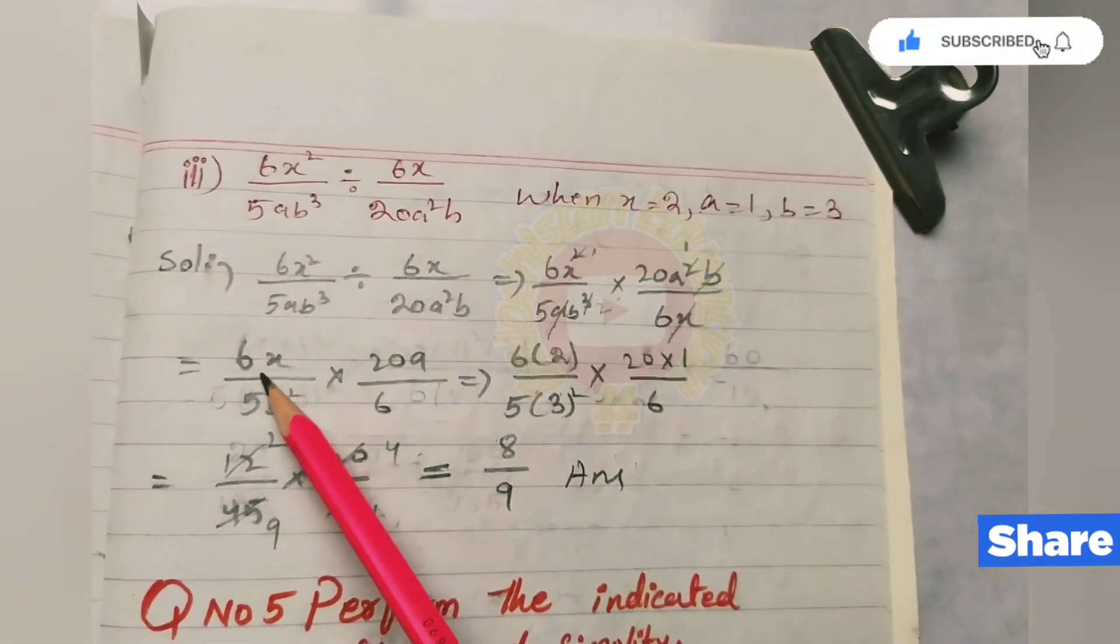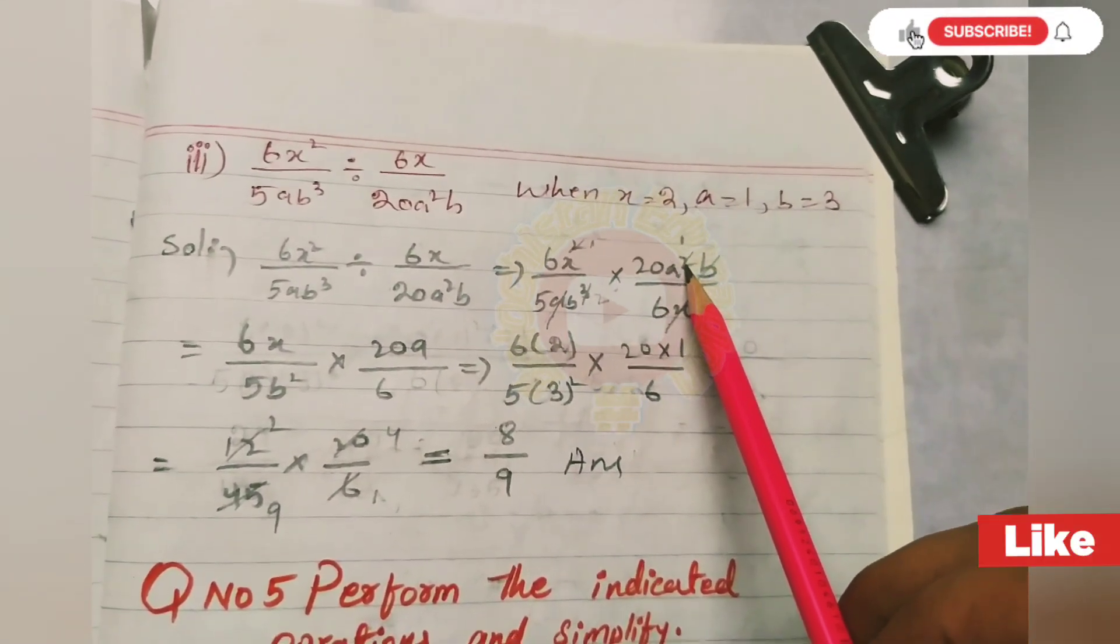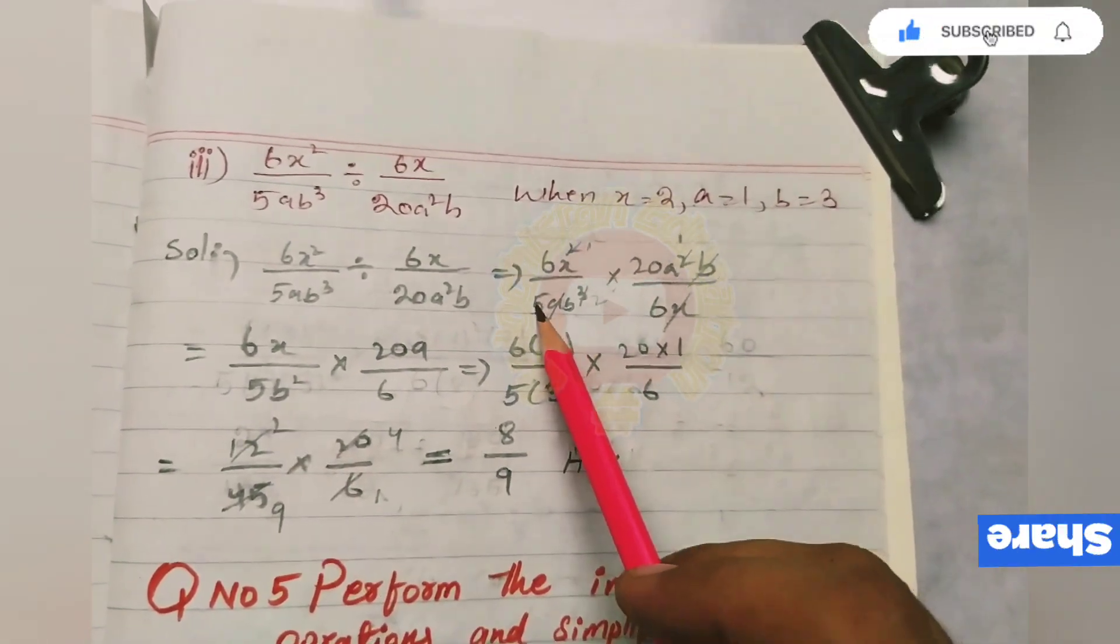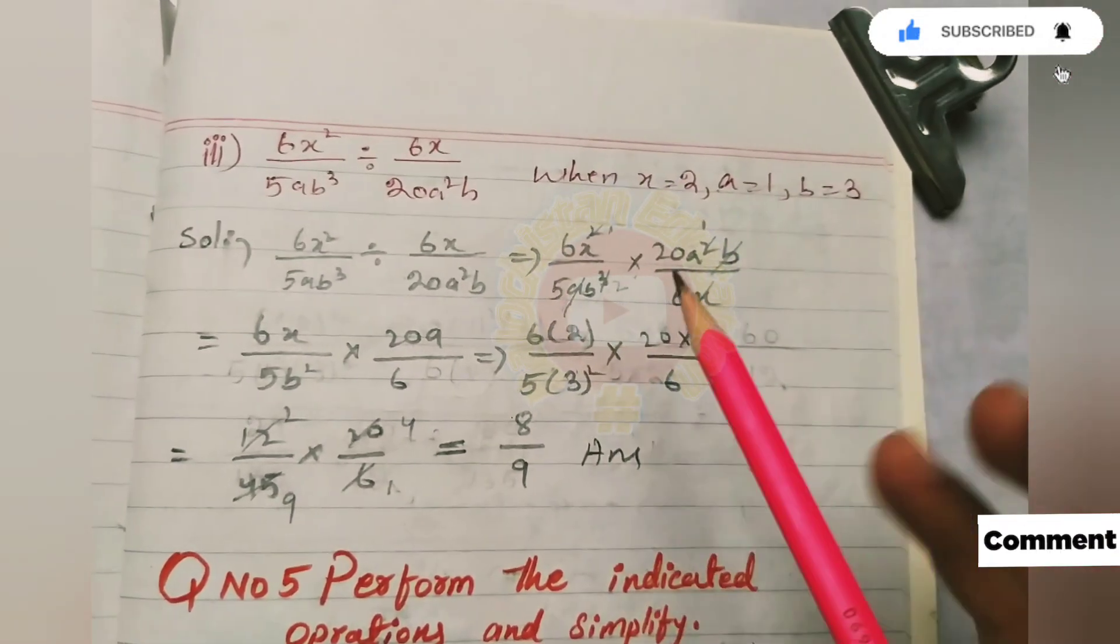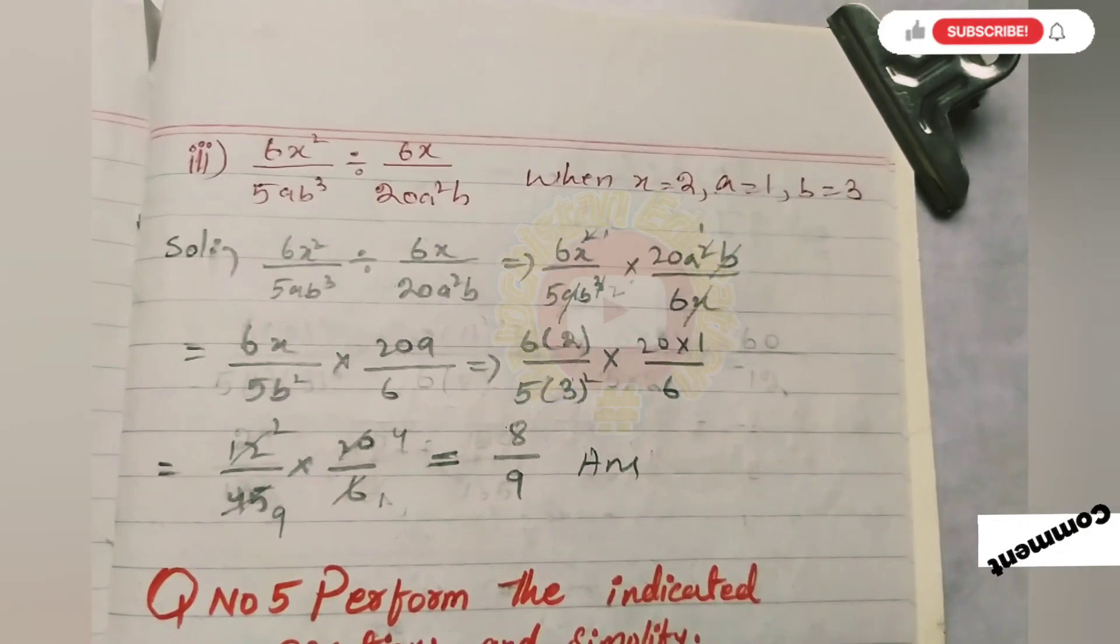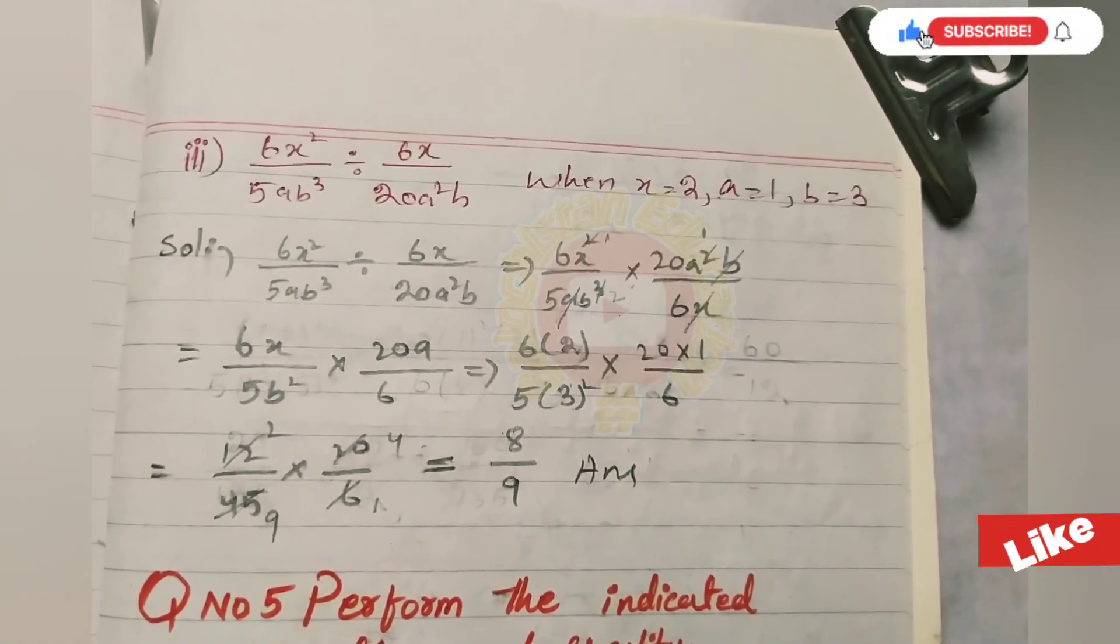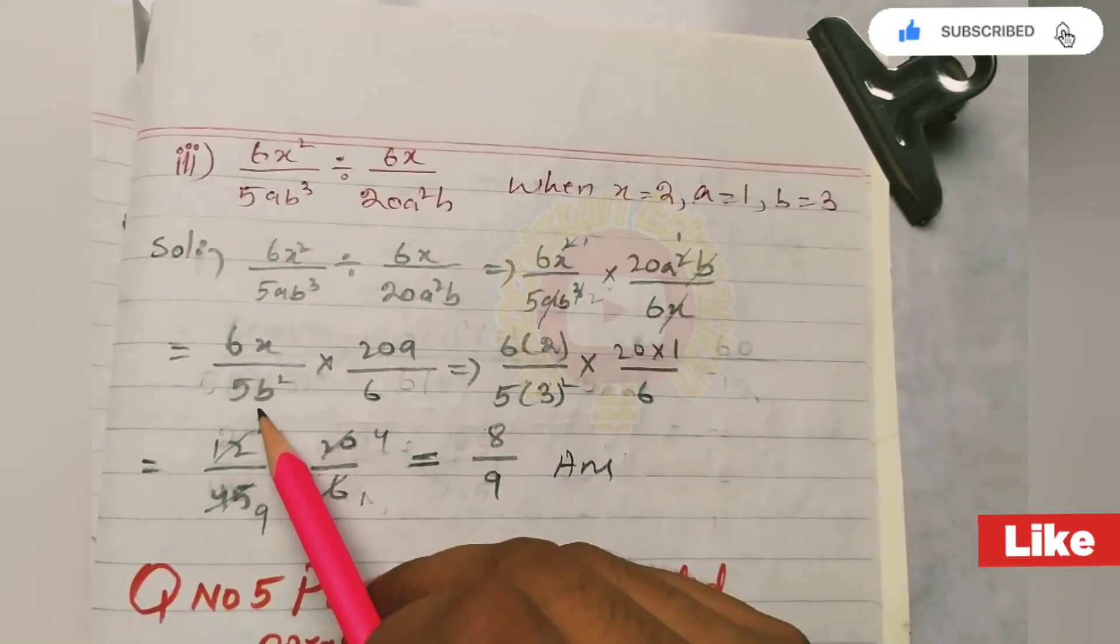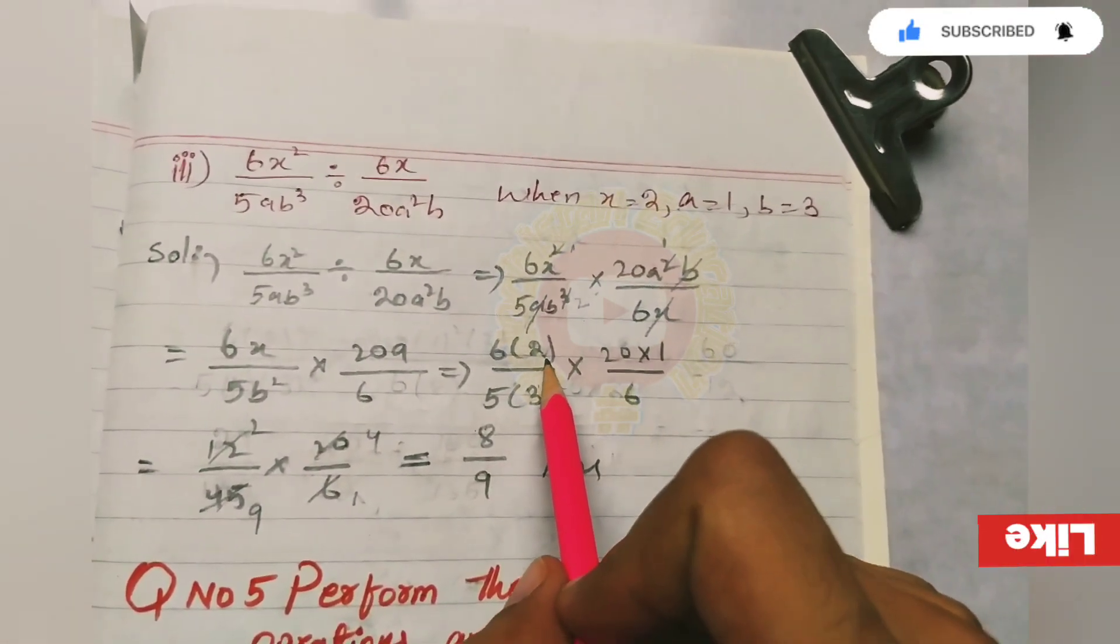Look at this: here on the 6x, here on the 2a, because the 2x cut and 1 is cut. So here on the 5b square, because the cube is cut, then a is cut. So here on the 6x cut, then the 2x cut. Now we will be able to put the values, then cut the values, and the rest are equal.